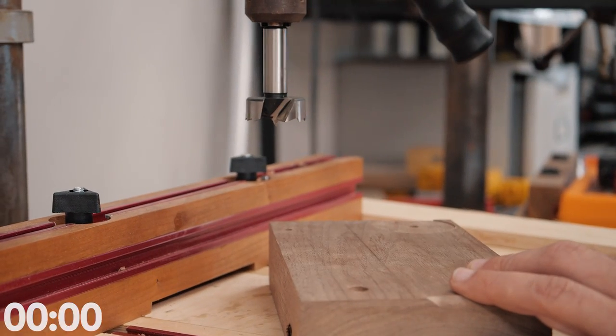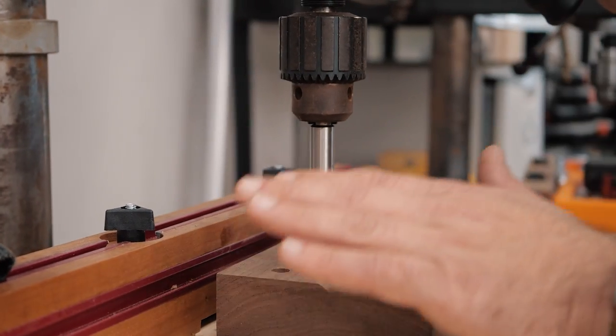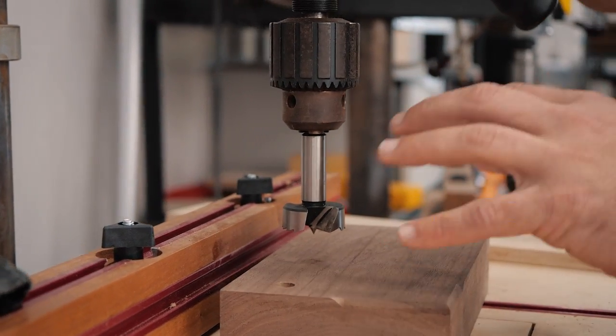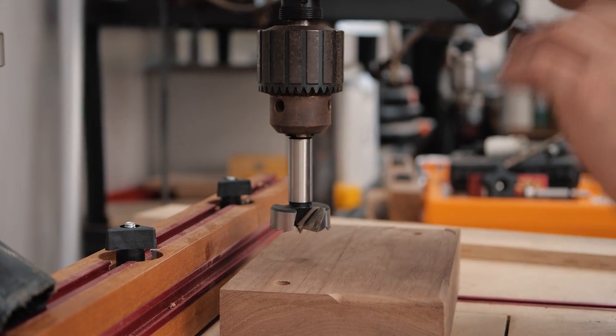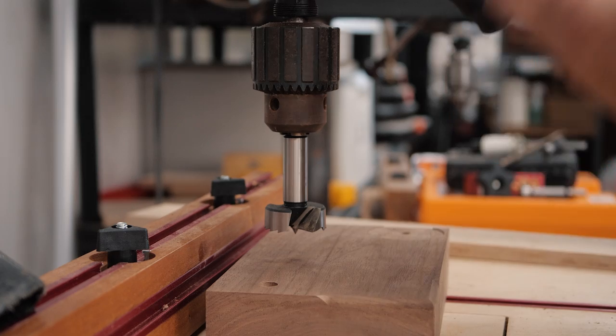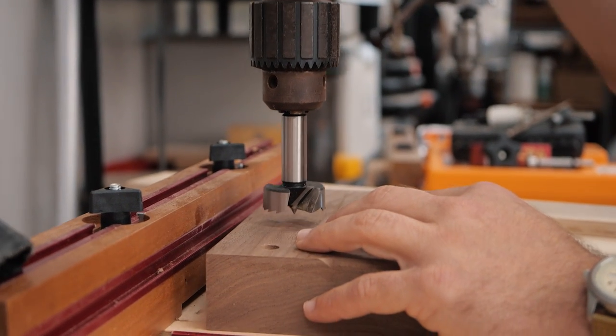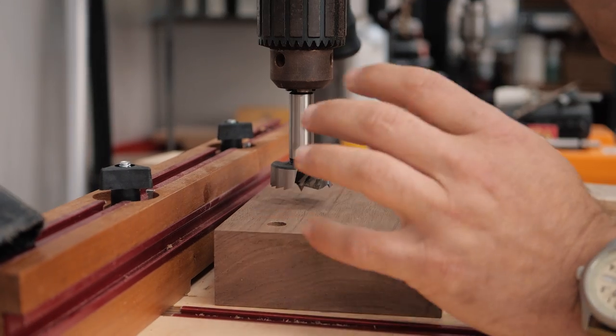When you use a Forstner bit, the enemy of a dull tool is heat. Heat dulls a bit faster than anything. And Forstner bits, because of the shape and style of the cutter, have a tendency to heat up. So you want to go down and up, down and up. And you want to make sure you are clearing chips out of the way.